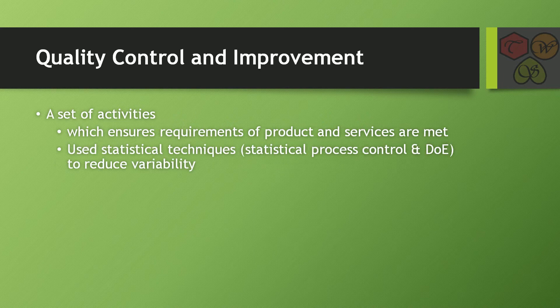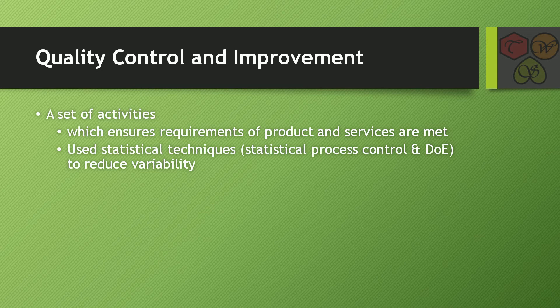The next one is quality control and quality improvement. It is a set of activities which ensures the requirements of the product and services are met. It also uses statistical techniques like statistical process control charts and design of experiments (DOE) to reduce variability. Variability, which we learned in the first lecture, means the difference in the size of products made by a company. Quality control and improvement ensures product and service requirements are met and reduces variability using statistical techniques and design of experiments.